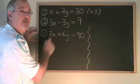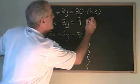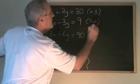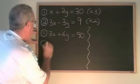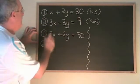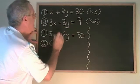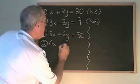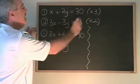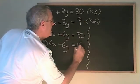The way to turn negative 3 into 6y is multiply by 2. That gives us 3 times 2 is 6x, negative 3 times 2 is negative 6y, and 9 times 2 is 18.